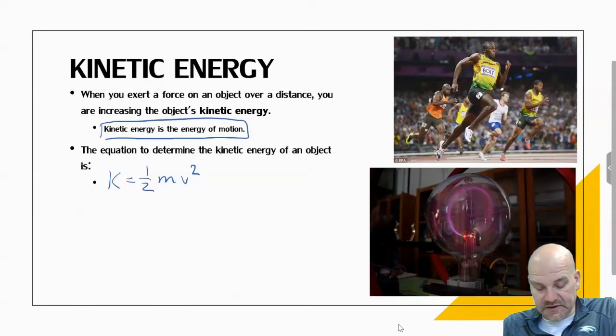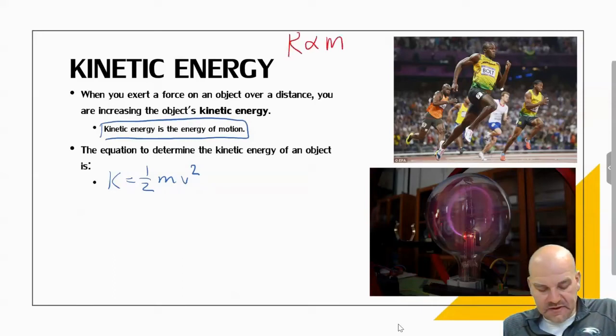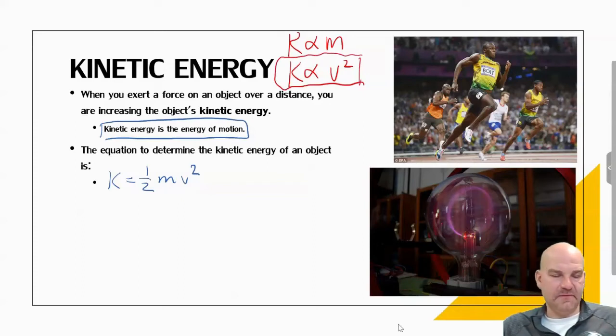You can see these relationships here. K is directly proportional to mass, and it's also directly proportional to speed squared. And this is the relationship that AP really likes to focus on.